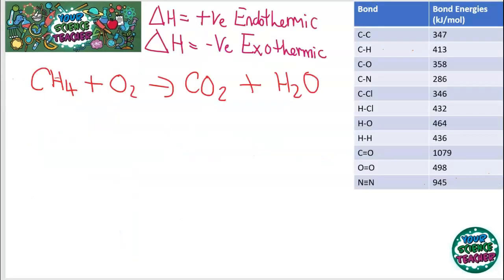If you are doing the foundation paper of combined, well done. You have done amazingly. This is where it finishes for you. If you are doing triple science or the higher paper, you've just got a little bit more to go. We're going to look at bond energies now and how to quantitatively, that means with numbers basically, analyze exothermic and endothermic reactions. And the way we do that is by looking at the energy in each of the bonds.